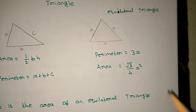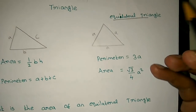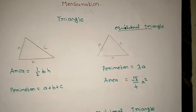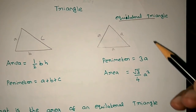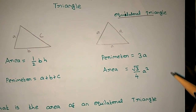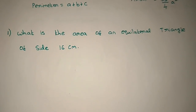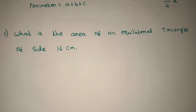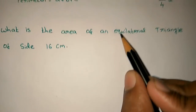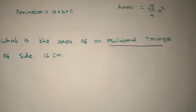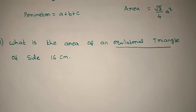Now let's look at a question. What is the area of an Equilateral Triangle whose side is 16m? These basic sums are very common. If we look at the formula, the answer is straightforward.